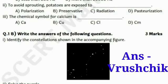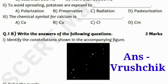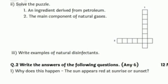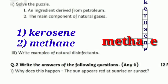Question 1B: write the answers of the following questions. Identify the constellations shown in the given figure. The answer is Vruchik — you can also write this figure as Scorpio. Second, solve the puzzle: the first word is an ingredient derived from petroleum, and the second word is the main component of natural gas. Answers are kerosene and methane. Write this puzzle with the proper alphabets from these words.